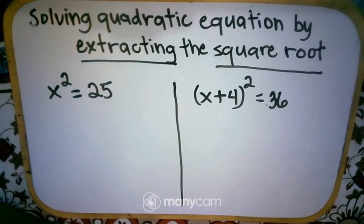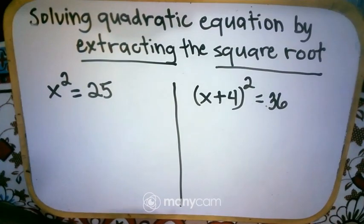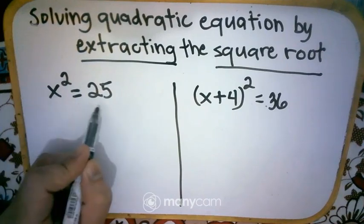Let's dig in with more examples about solving quadratic equations by extracting the square root. So we have here x squared is equal to 25.